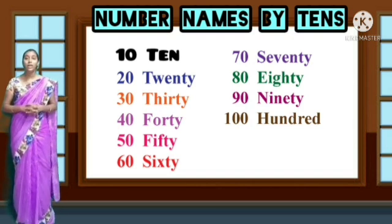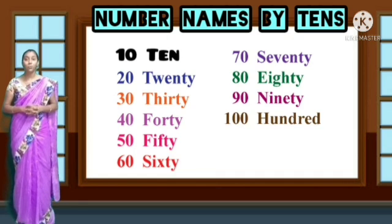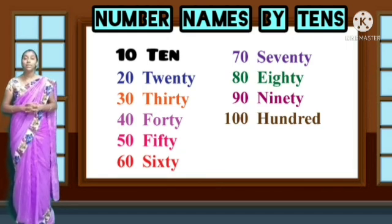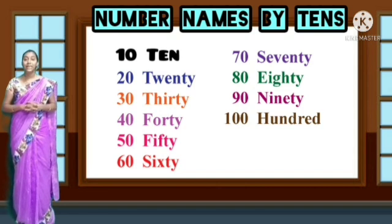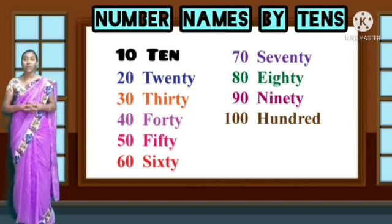The next one is 20 — two, zero, twenty. T-W-E-N-T-Y, twenty. Then 30 — three, zero, thirty. T-H-I-R-T-Y, thirty.